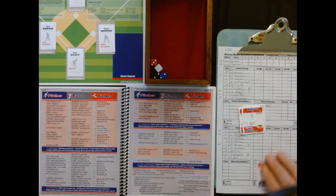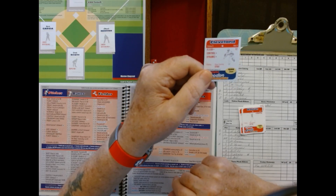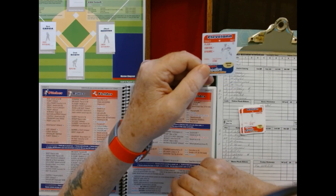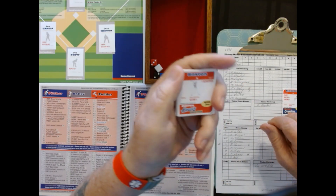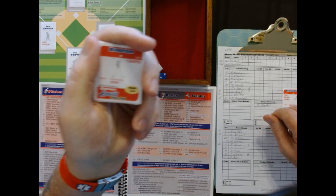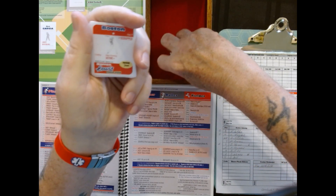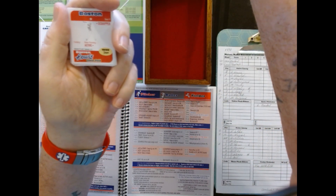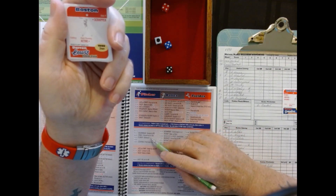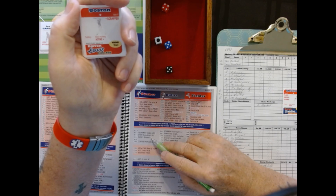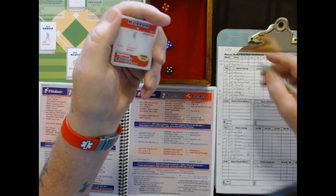On the mound today for Cleveland we have Dwight Gooden — semi-flash, semi-controlled, semi-dynamic, a pretty good card. Leading off for Boston is Darren Lewis, playing center field today. We got a 4-5-5 roll, and the decider die says yes, he is a flash. Struck him out.